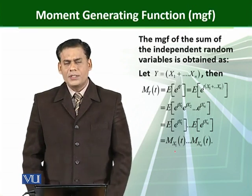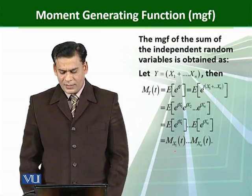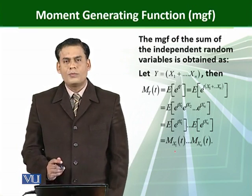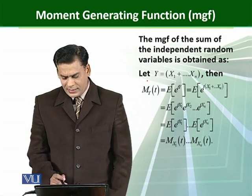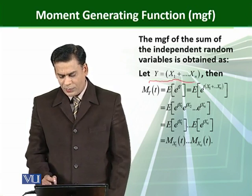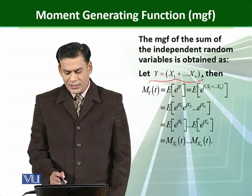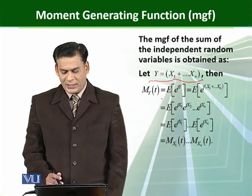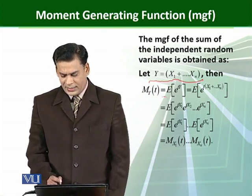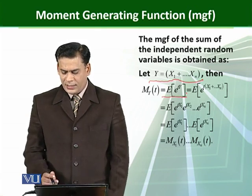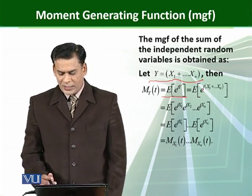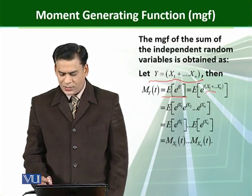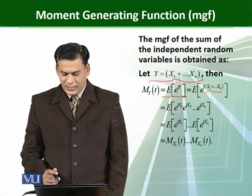The moment generating function of the sum of independent random variables is obtained as follows. Let we assume a variable Y that is equal to X1 plus X2 up to Xn. Then the moment generating function M_Y(t) is equal to the expected value of e raised to power t·Y, which equals the expected value of e raised to power t times (X1 plus X2 up to Xn).